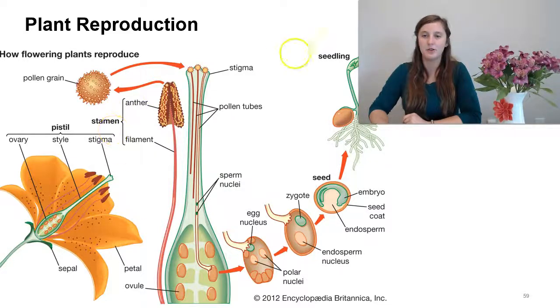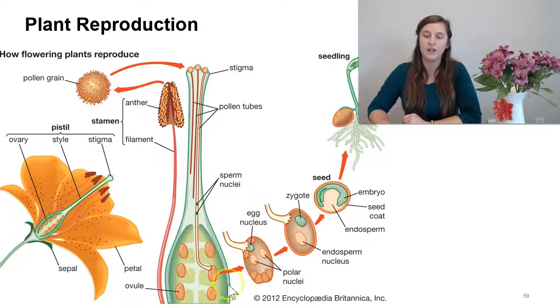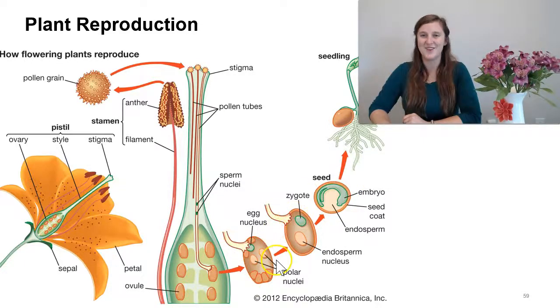So a little review: we have the pollen grain landing on the stigma, fertilization and pollination occurring, and then seed development.